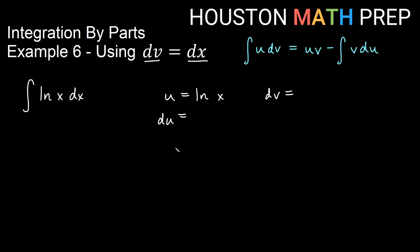So if I choose ln x to be u, then we would actually have the derivative is 1 over x dx. The only thing left is really 1 dx or dx. So we just let dv equal dx and then the antiderivative of 1 dx or just dx is going to be x.